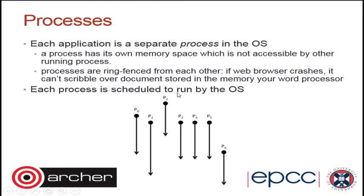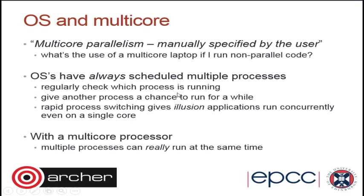The operating system has a scheduler. On a laptop with 50 programs open but only a limited number of cores, the scheduler runs all processes one after another, giving each enough time to appear to be progressing in real time. With four or eight cores, it can run more than one program simultaneously, but the OS has always managed taking applications and letting them run across available hardware.